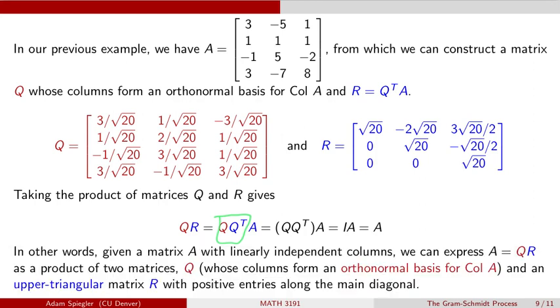And again, both of these matrices have nice properties. So this matrix A can be written as QR, and this is what we call the QR factorization of matrix A, where Q has columns that form an orthonormal basis for the column space of A, and R is an upper triangular matrix where all of the entries along that main diagonal are positive.